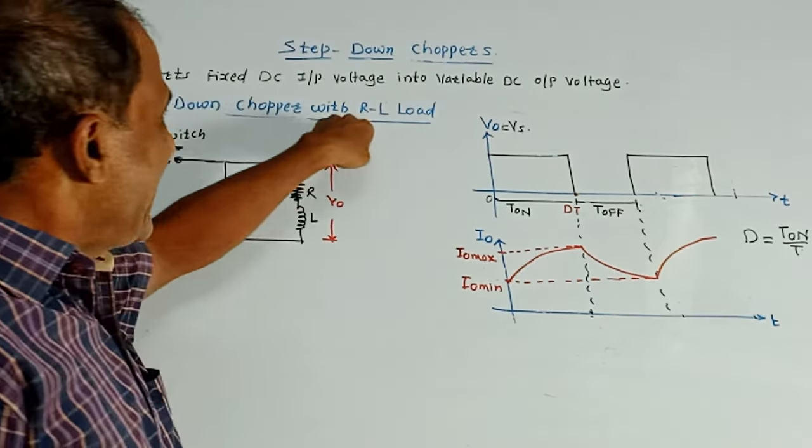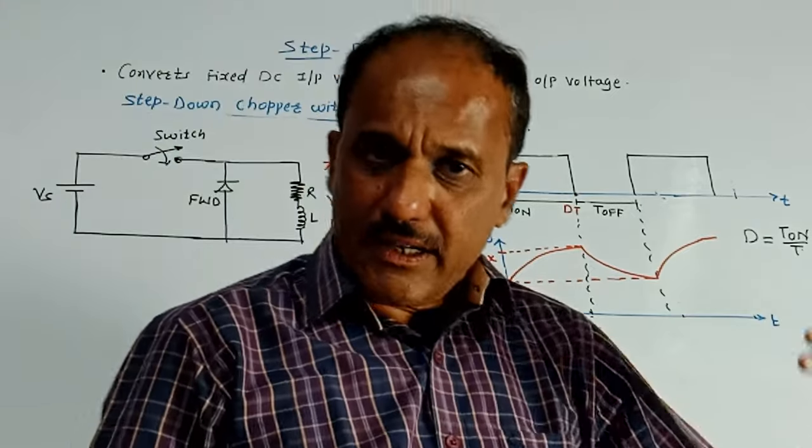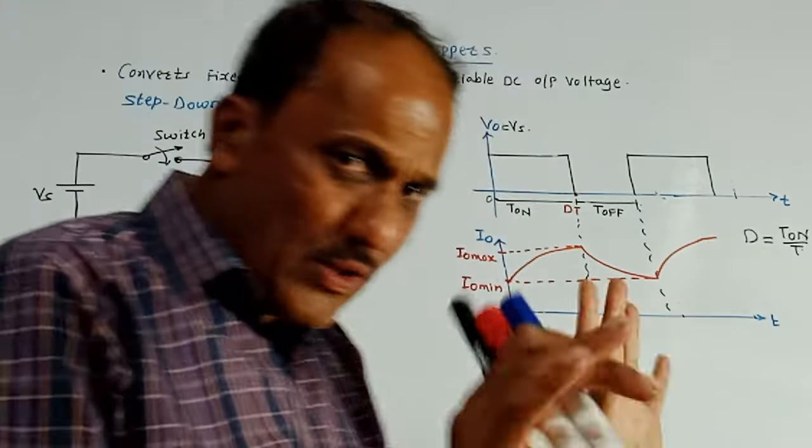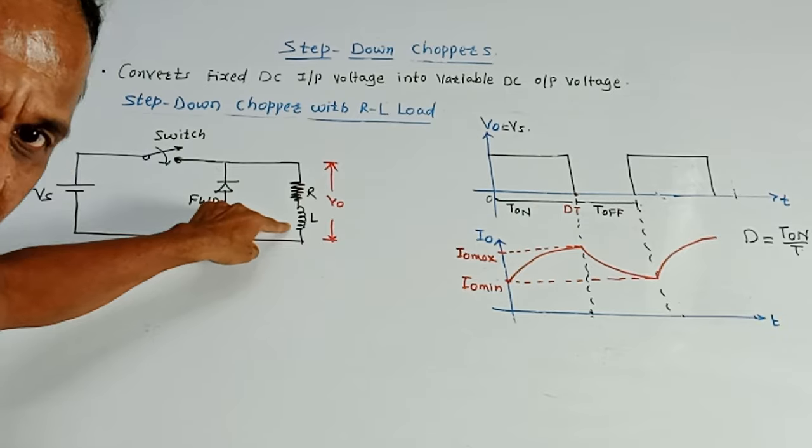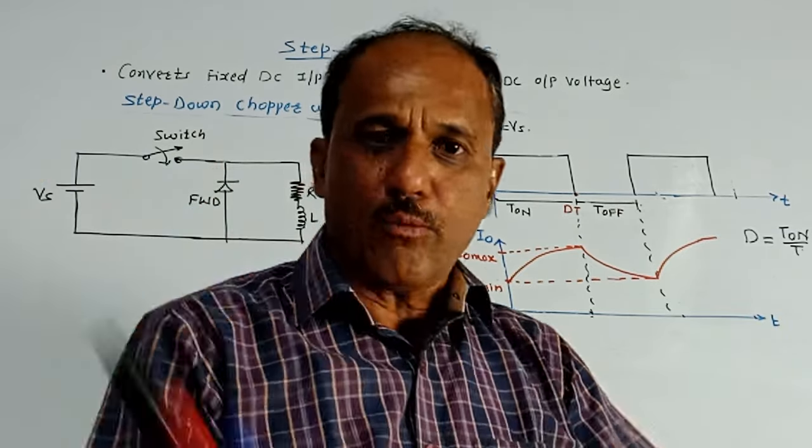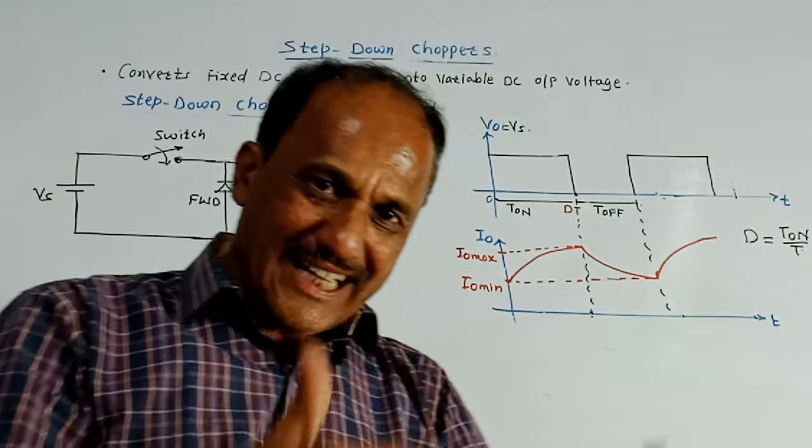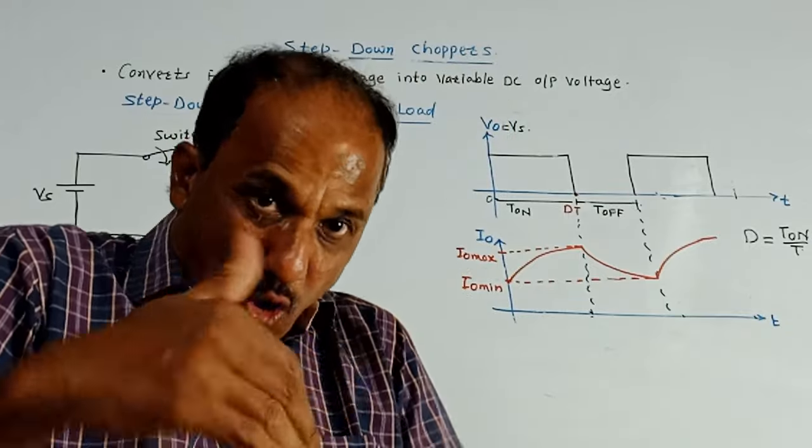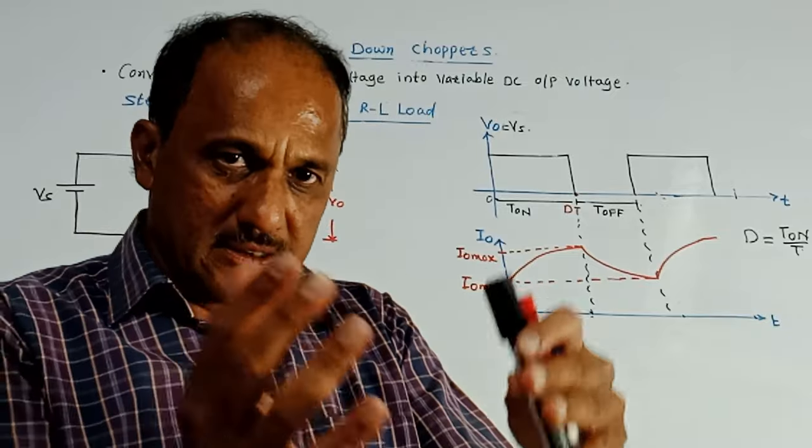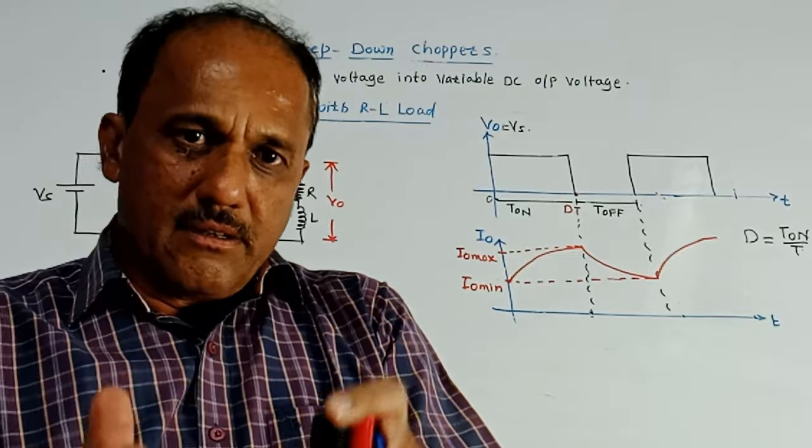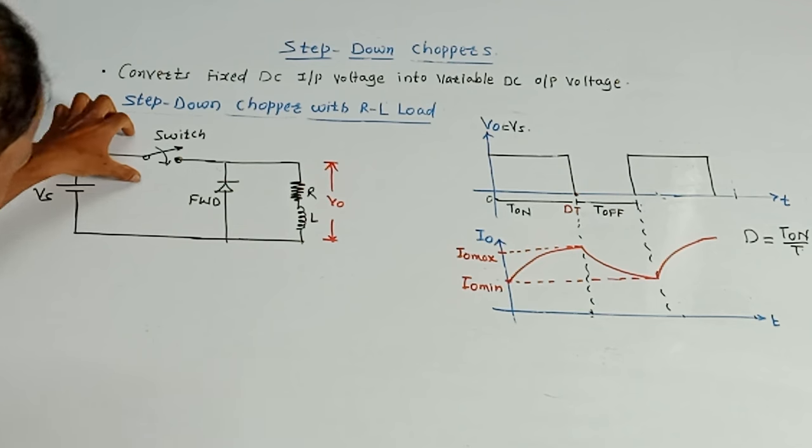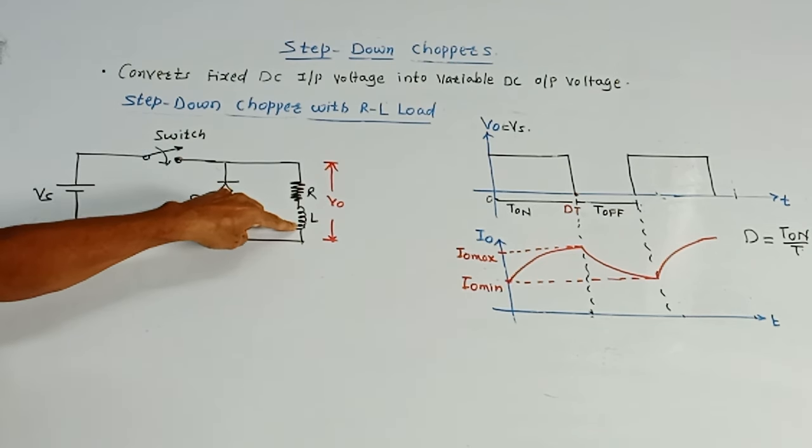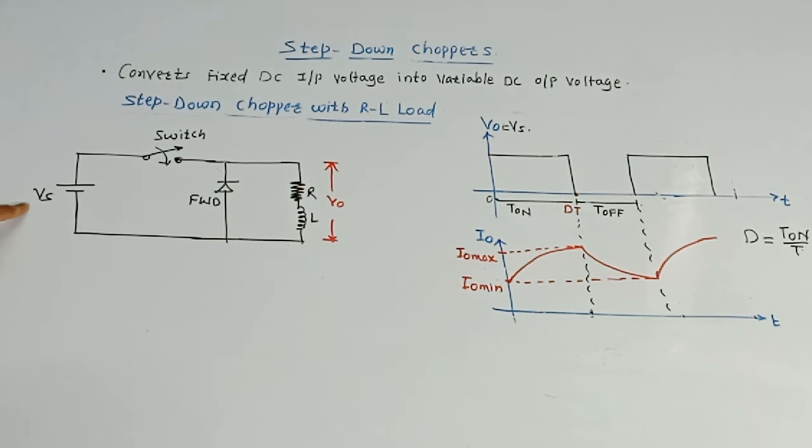Next is step down chopper with RL load. It is very much similar to the earlier explanation of R load. Only difference is that here inductive load is used. So at the output in series with R, we have shown one inductor L. Now naturally there will be effect of inductor. Recall the things. Inductor stores the charges and whenever the circuit is not operating that time, inductor reverses, I mean inductor sends this stored energy back to the source. This is the basic principle of inductor. The circuit remains same apart from one additional component that is inductor.